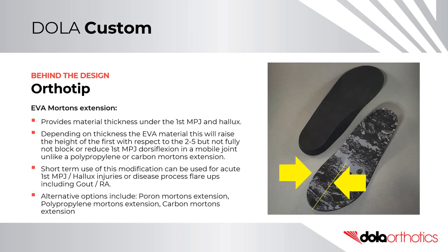Ortho Tip – An EVA Morton's extension provides material thickness under the first MPJ and hallux. Depending on EVA thickness, it raises the height of the first with respect to the second to fifth, but does not fully block or reduce first MPJ dorsiflexion in a mobile joint, unlike a polypropylene or carbon Morton's extension. Short-term use can address acute first MPJ or hallux injuries, or disease flare-ups such as gout or RA. Alternatives include a Poron, polypropylene, or carbon Morton's extension.